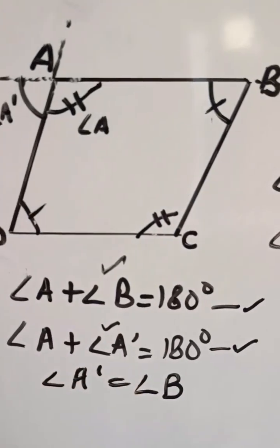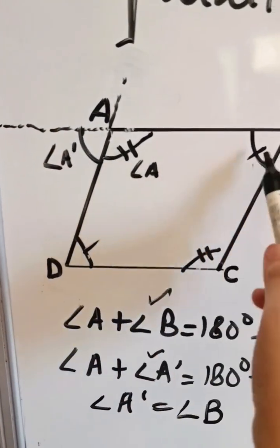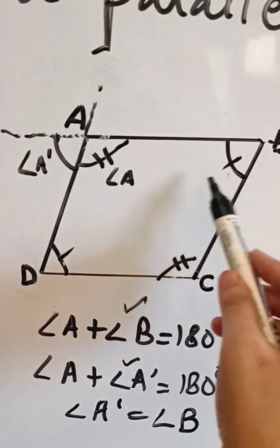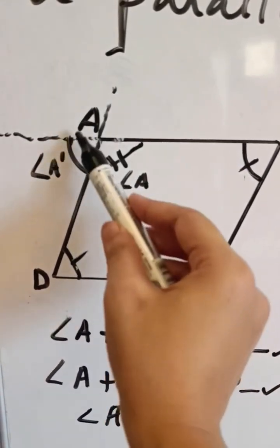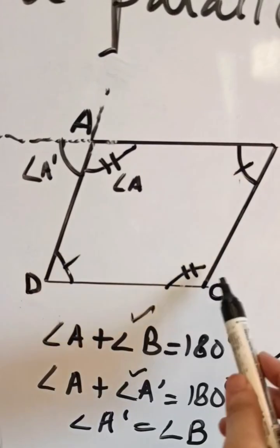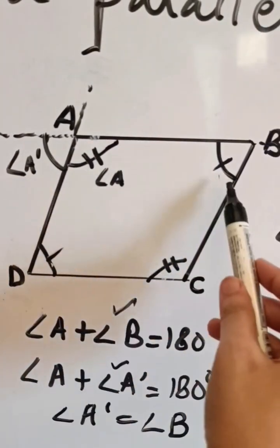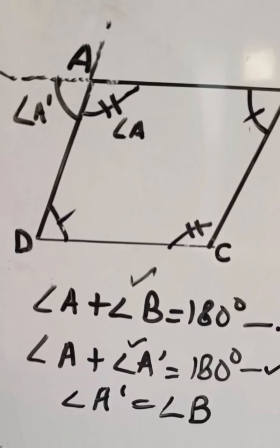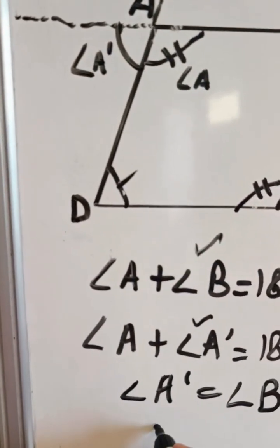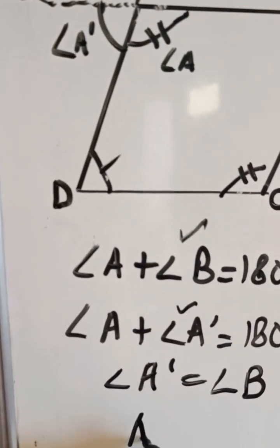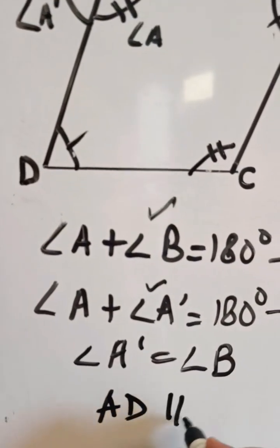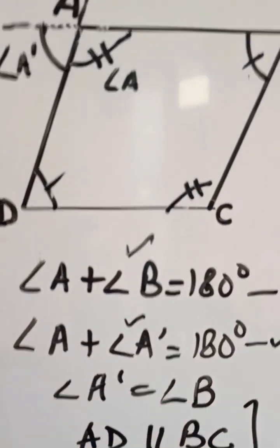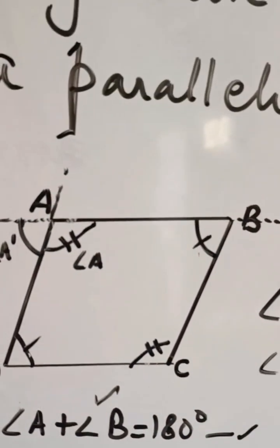Angle A dash equals angle B. That means angle A dash and angle B are forming corresponding angle pairs, and when corresponding angles are equal, the lines are parallel. Therefore, we have proven that AD is parallel to BC by the corresponding angle pair rule.